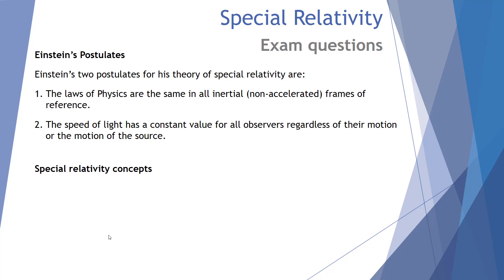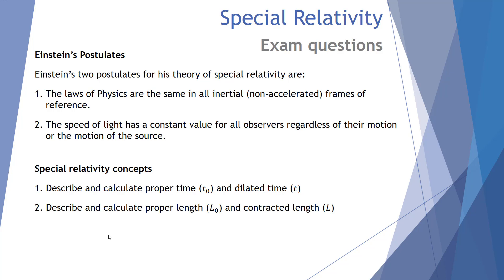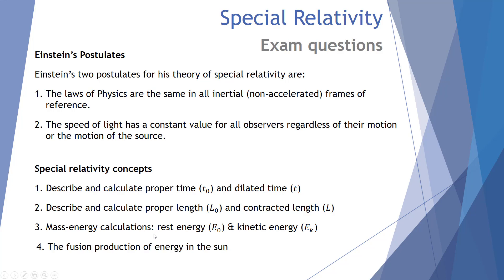The special relativity concepts we'll be looking at: number one, we need to be able to describe and calculate proper time and dilated time. Number two, describe and calculate proper length and contracted length. Number three, mass-energy calculations where we understand rest energy and kinetic energy. And finally, number four, the fusion production of energy in the sun. These are the four main concepts the VCAA study design expects students to understand at the unit three level.